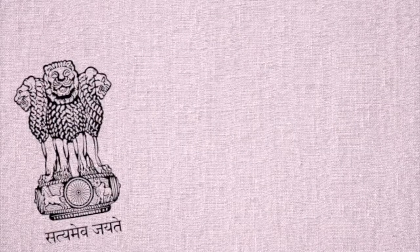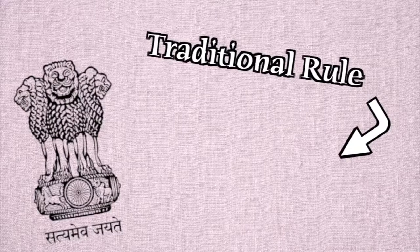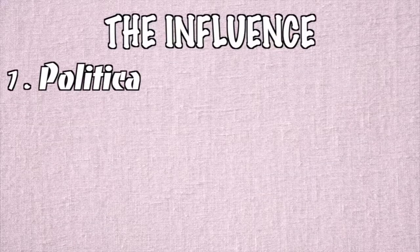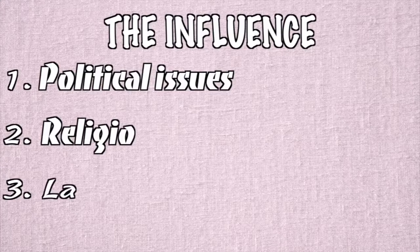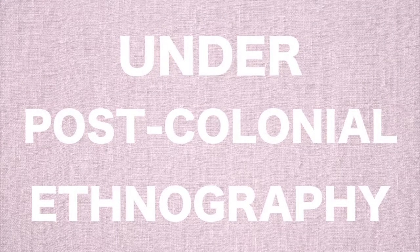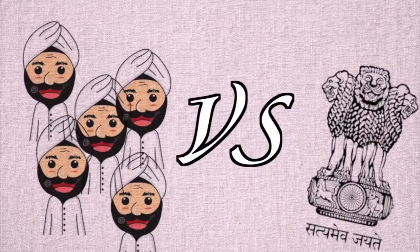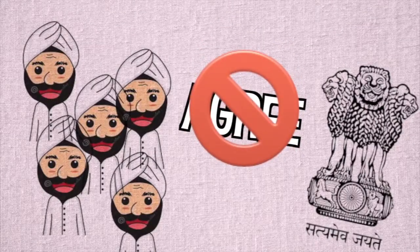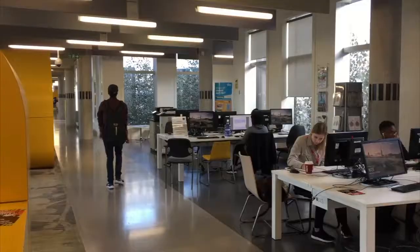For example, the political part. As the government in India applies traditional ruling in the country, it opens up the effect of postcolonial ruling on the cultural aspects of the colony as well as the influence on political issues, religions and language. Under postcolonial ethnography, there comes an opposition between people and the government. Some people do not agree with the way the government rules the country and its policies.